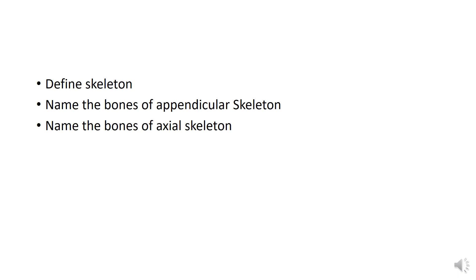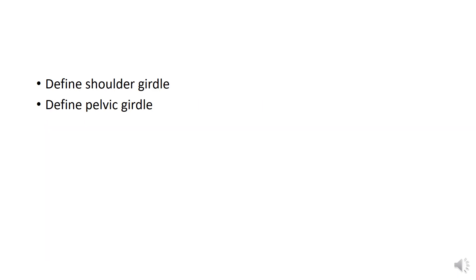The second question is: name the bones of the appendicular skeleton. The third question is: name the bones of the axial skeleton. The skeleton is divided into two parts — the appendicular skeleton and the axial skeleton — so you have to write the names of the bones of both, and also define the skeleton.